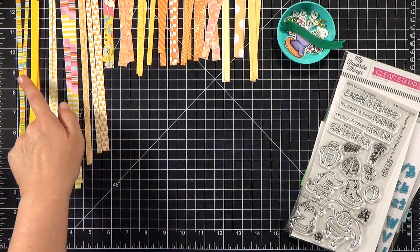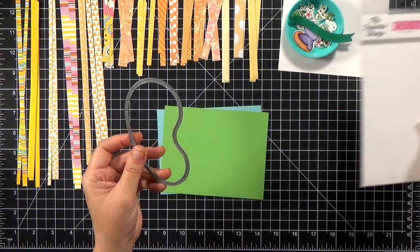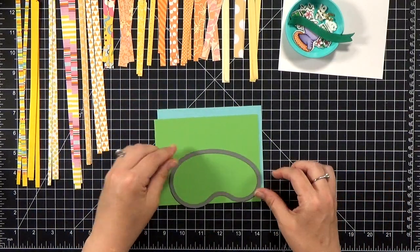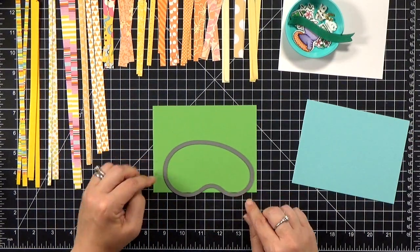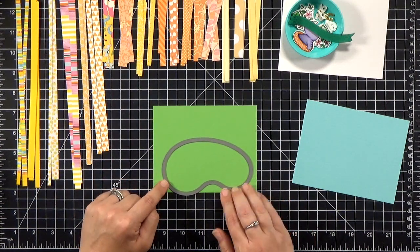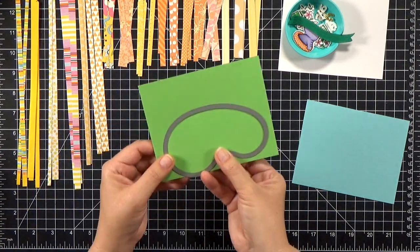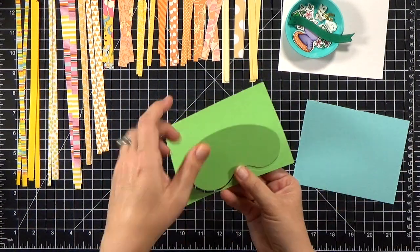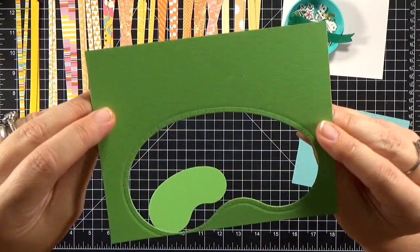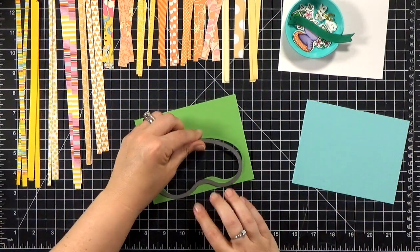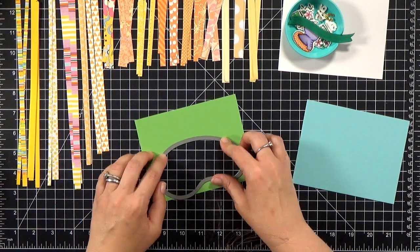And then to get started, I took the green piece of paper, that's going to be my pool, and I lined up the swimming pool die. I ran it through my die cutting machine, and you can see the edges actually emboss around the outside there. So it gives you that shape and a little bit of definition there.